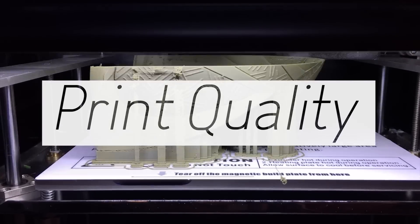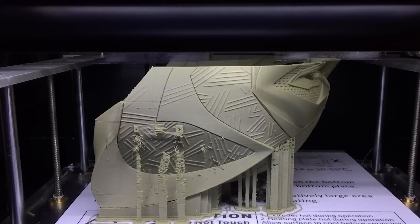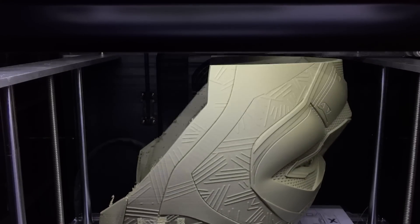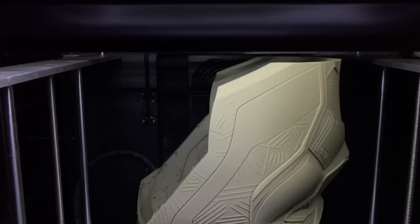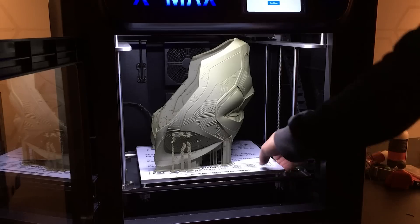Let's take a look at print quality. The first thing I printed was this large Black Panther helmet from do3d.com. It's a free model and I'll leave a link in the description if you want to print it yourself.